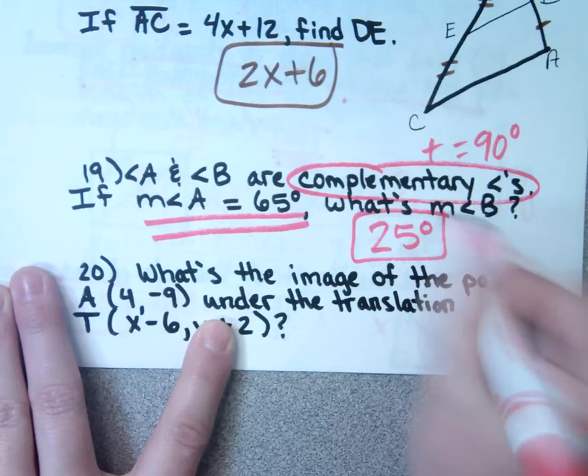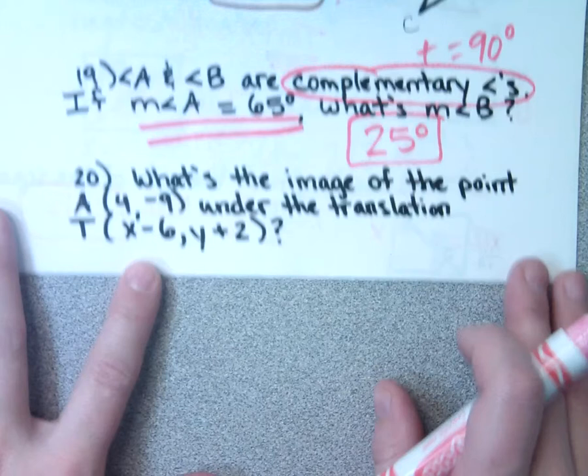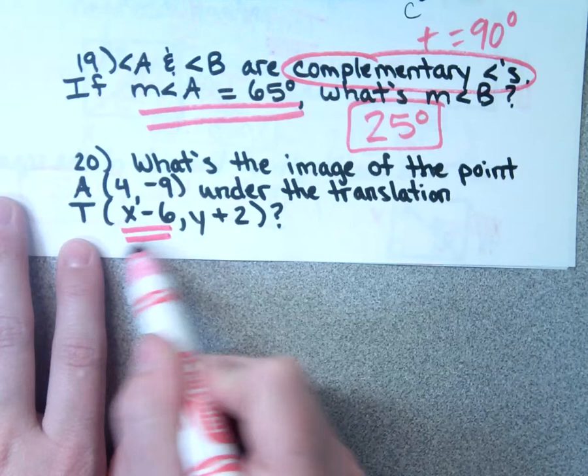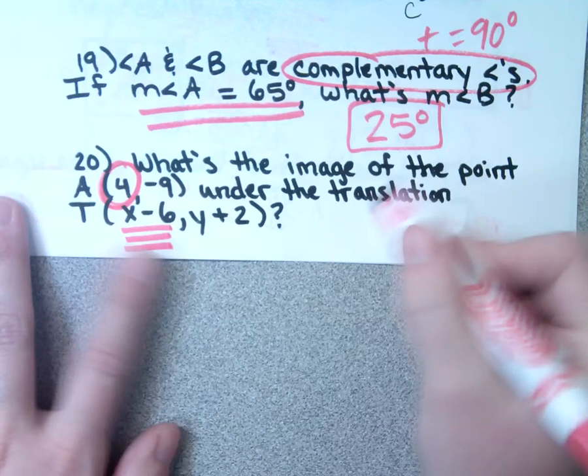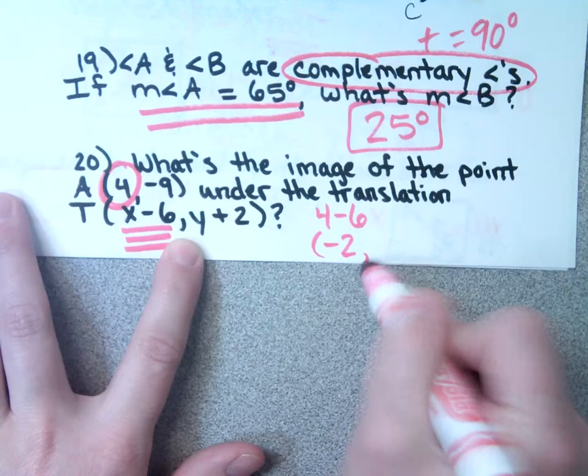Number 20: what's the image of point A(4, −9) under this translation? It tells you to subtract 6 from the X coordinate: 4 − 6 = −2. Then add 2 to the Y coordinate: −9 + 2 = −7. So the new point is (−2, −7).